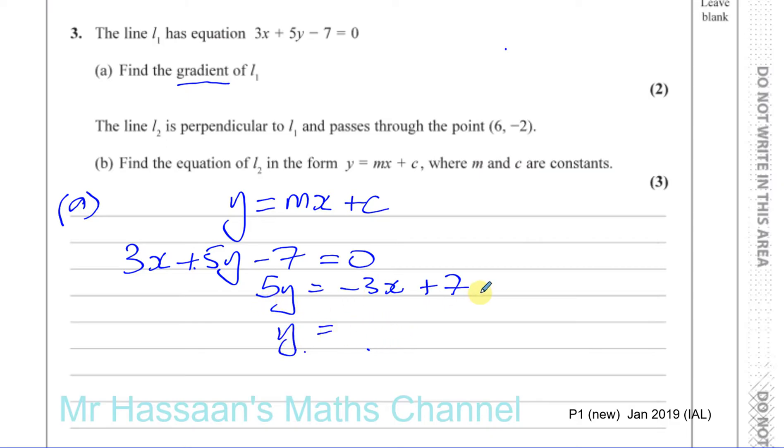Now I want to make y the subject, so I've got to divide both sides by 5. I could divide the whole of this side by 5, but then I won't have separate terms for my x and my constant. So what I do is divide each of them separately by 5, so you have minus 3 over 5x plus 7 over 5.